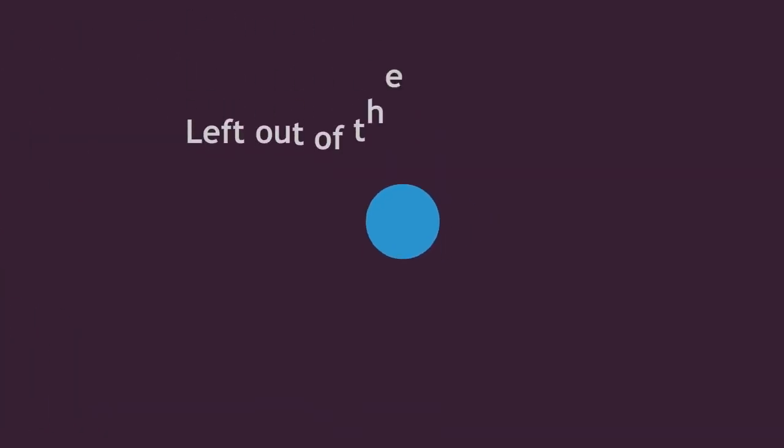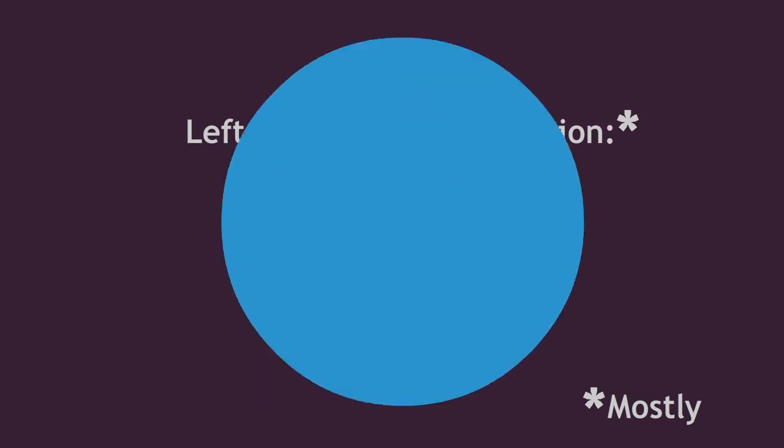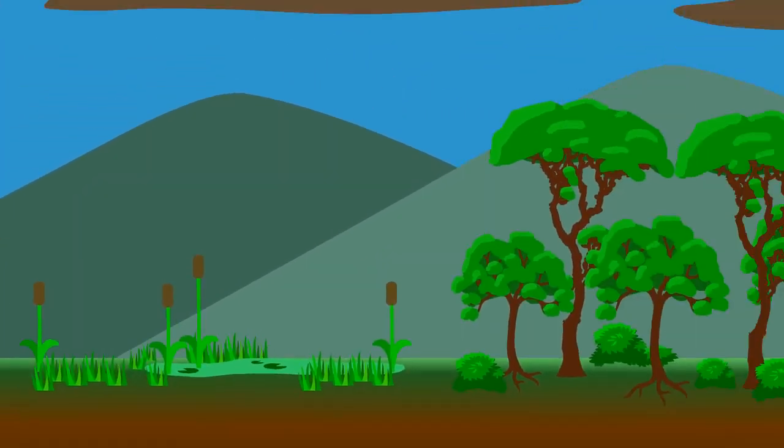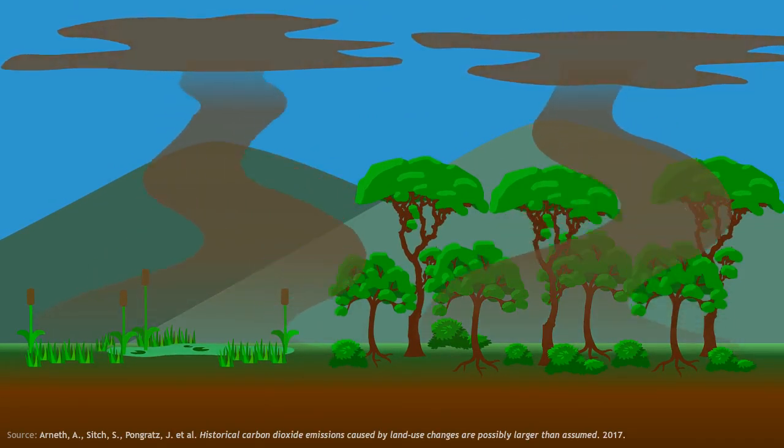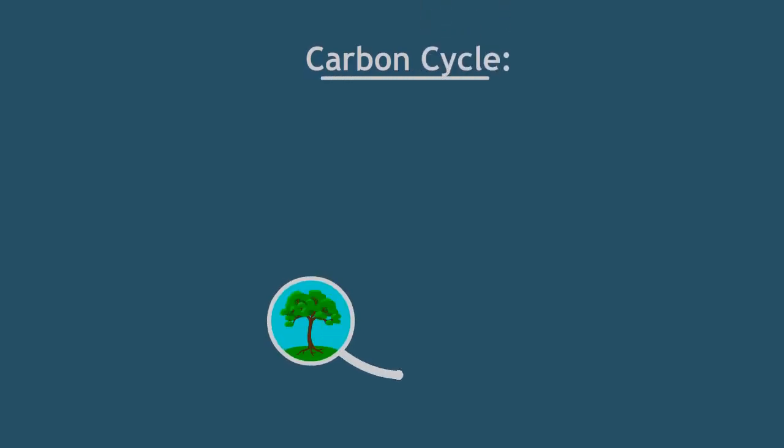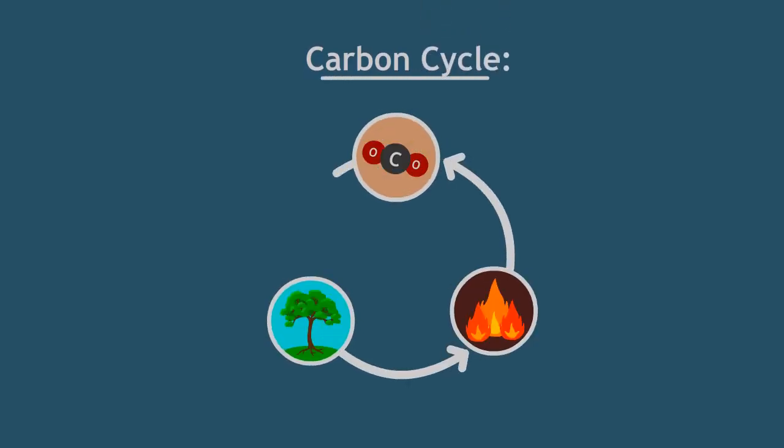What has been left out of the conversation, to a large extent, not entirely, is the role of forests and wetlands and soil in sequestering carbon, taking carbon out of the atmosphere and restoring a healthy carbon cycle, where whatever carbon is produced, it is reabsorbed again.